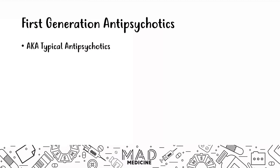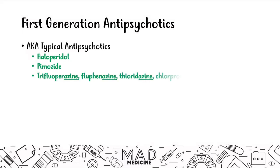First generation antipsychotics are also known as typical antipsychotics. These consist of haloperidol, pimozide, trifluoperazine, fluphenazine, thioridazine, and chlorpromazine — drugs you definitely need to know for Step 1. Most of these share the suffix '-azine,' which indicates a first-gen drug. The exceptions are pimozide and haloperidol, so commit that to memory.